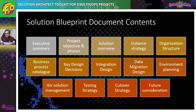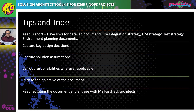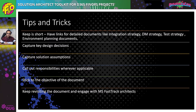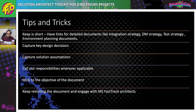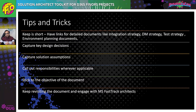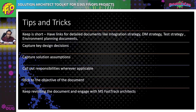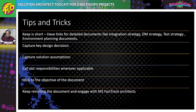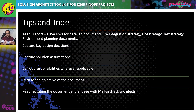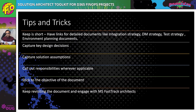Integration design and data migration design are also key components we will cover in upcoming slides. A few tips for a good solution blueprint: keep it short, don't elaborate in excessive detail on everything — have separate documents for things like testing strategy. Capture your key design decisions and solution assumptions, because if these change the solution is impacted. Stick to the objective of the document — it's not a statement of work or a detailed architecture document. Keep revisiting it and engage with your Microsoft FastTrack architects, as Microsoft conducts a solution blueprint review exercise as part of Success by Design.